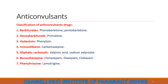This slide will focus on the classification of anticonvulsant drugs. Anticonvulsant drugs are used in the treatment of epilepsy and can be classified into seven basic categories: first is Barbiturate, containing phenobarbitone and pentobarbitone; second is Deoxy-barbiturate, containing primidone; third is Hydantoin, containing phenytoin; fourth is Iminostilbene, containing carbamazepine; fifth is Aliphatic Carboxylic acid, containing valproic acid and sodium valproate; sixth is Benzodiazepine, containing clonazepam, diazepam, and clobazam; and seventh is Phenyltriazine, containing lamotrigine.